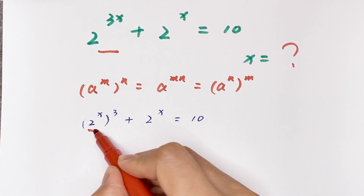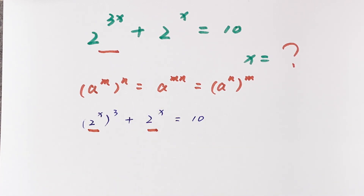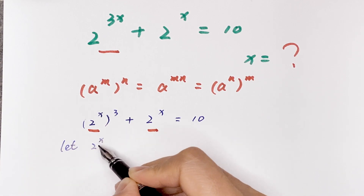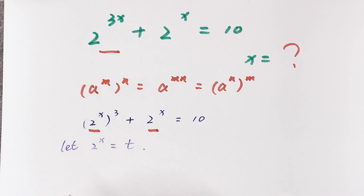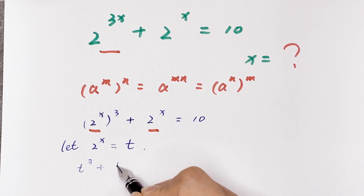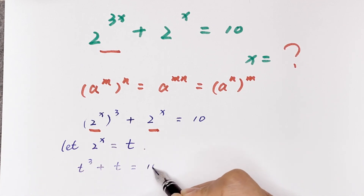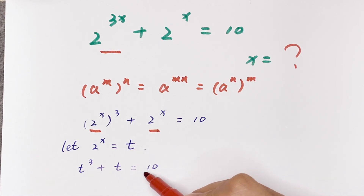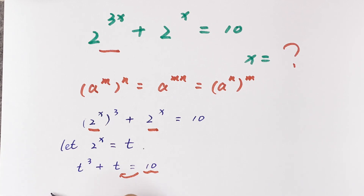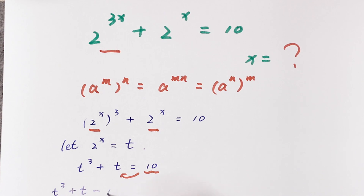Now 2 to the power x is common, so we let 2 to the power x equal t. Our equation becomes t cubed plus t is equal to 10. Taking everything to the left side, it becomes t cubed plus t minus 10 is equal to 0.